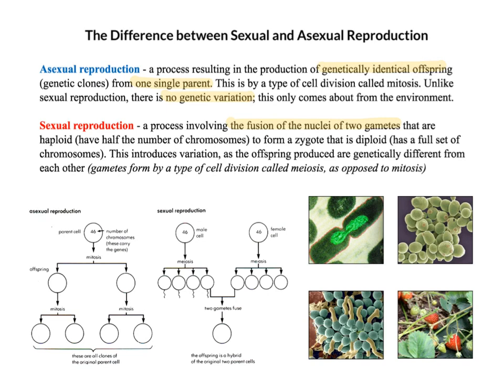Unlike asexual reproduction, we've got the fusion of the nuclei of two gametes, and what they form is what's called a zygote. So we're not forming genetically identical offspring or clones - we're forming a zygote that is diploid, meaning it's got a full set of chromosomes. All of your body cells are diploid cells, other than sperm and egg. Sperm and egg are haploid - they have half the number of chromosomes, but every other cell in your body is a diploid cell.